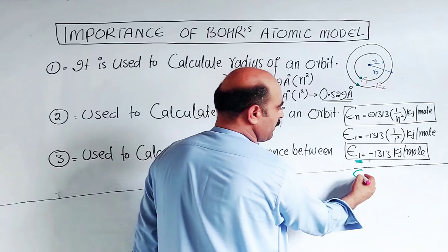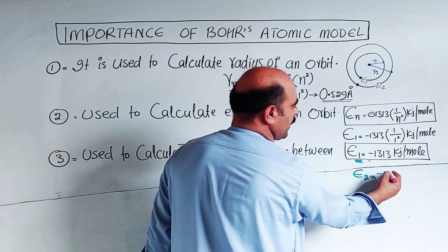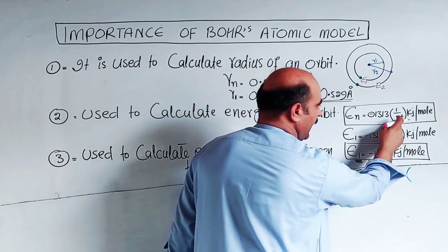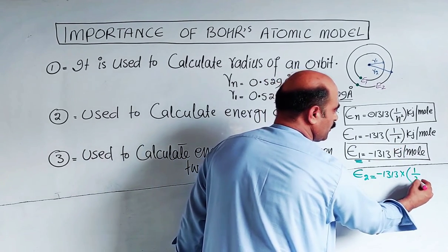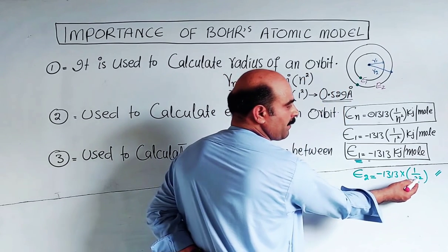If we want to find the energy difference between first and second orbits, we put n equals 2: E_2 equals minus 1313 times one over n squared, where n equals 2 squared, in kilojoules per mole.